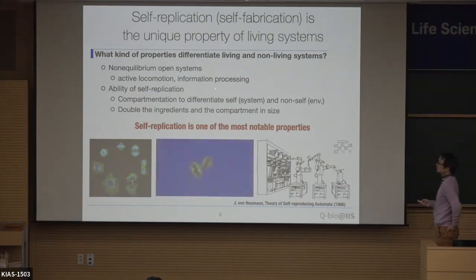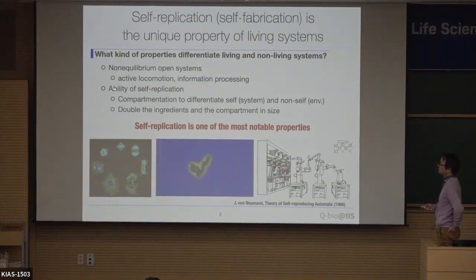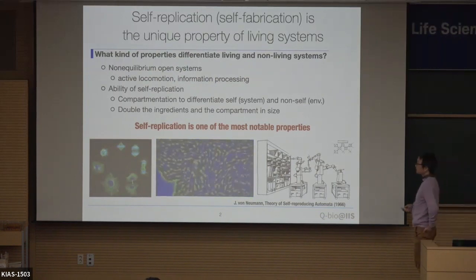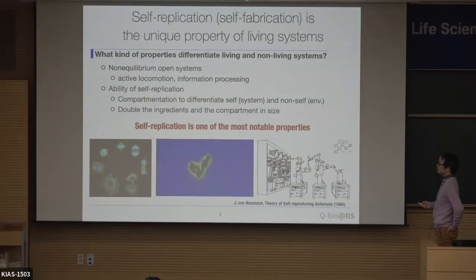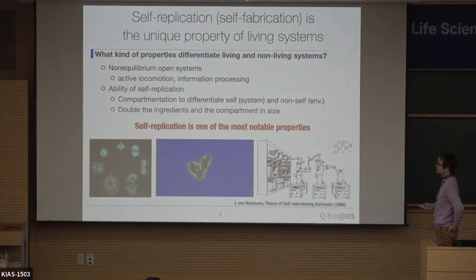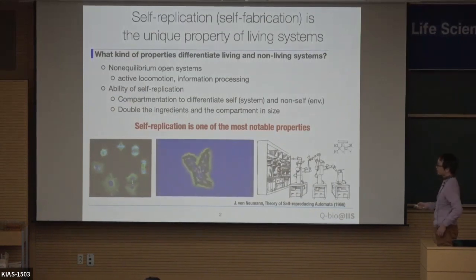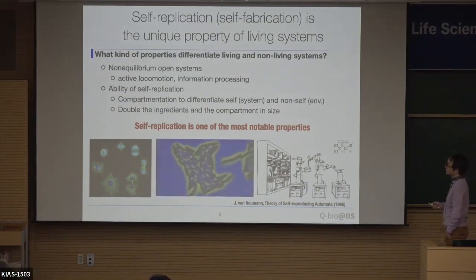But being non-equilibrium and open is not a sufficient condition. Living systems should have the ability to replicate themselves. More specifically, living systems should have compartmentation that differentiates the system from the environment. This compartment — I will call it volume or cell — should double its ingredients and double itself in size to achieve replication. So we focus on how we can represent self-replication from a physical and chemical viewpoint.